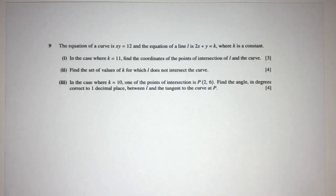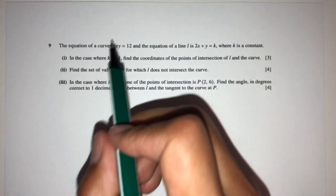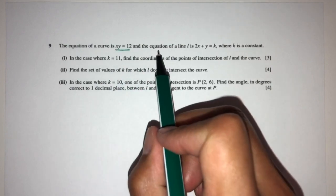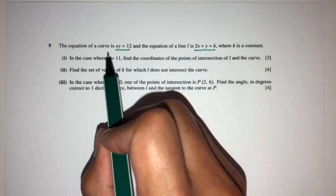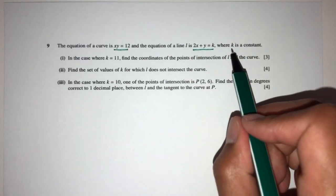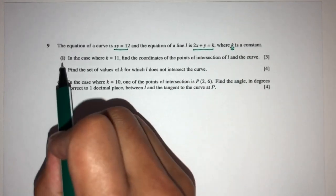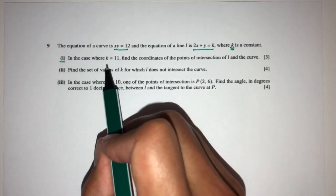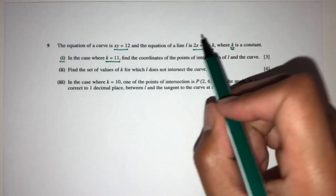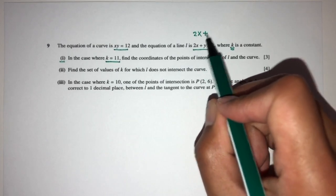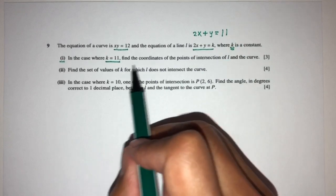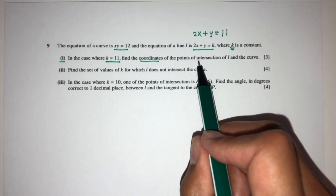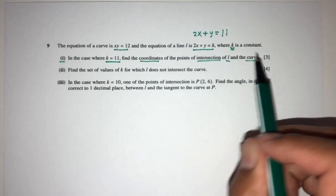Let's move on to the next question. The equation of the curve is xy equal to 12, and the equation of a line is 2x plus y equal to k, where k is a constant. So we have a straight line and a curve. For Part 1, in the case where k is equal to 11, we have 2x plus y equal to 11, and we have to find the points of intersection of the curve and the line.